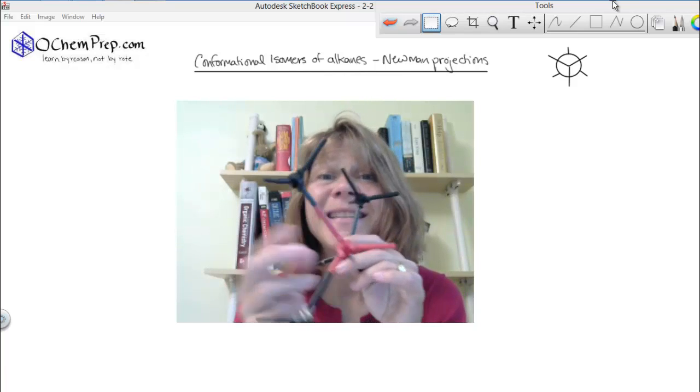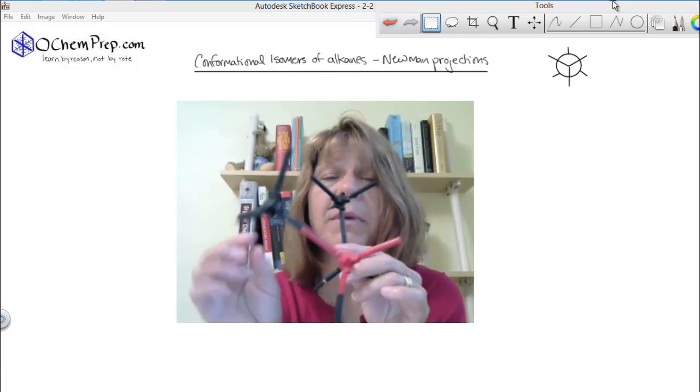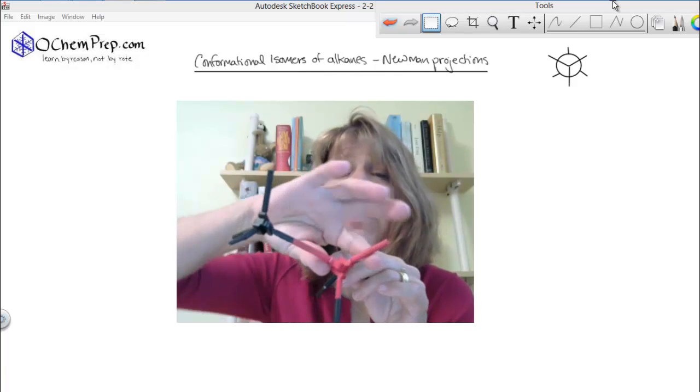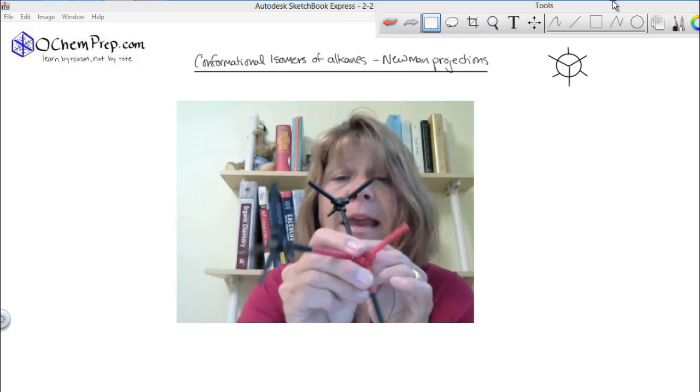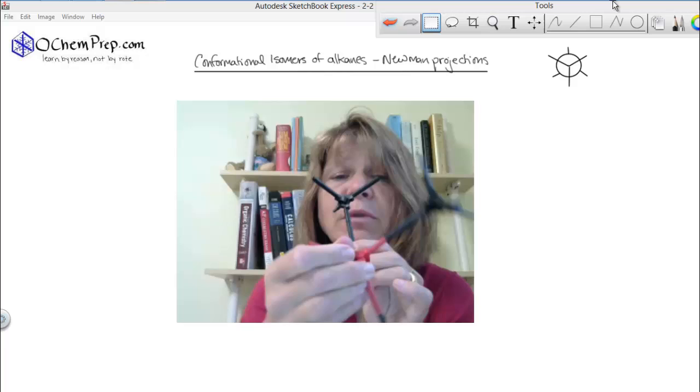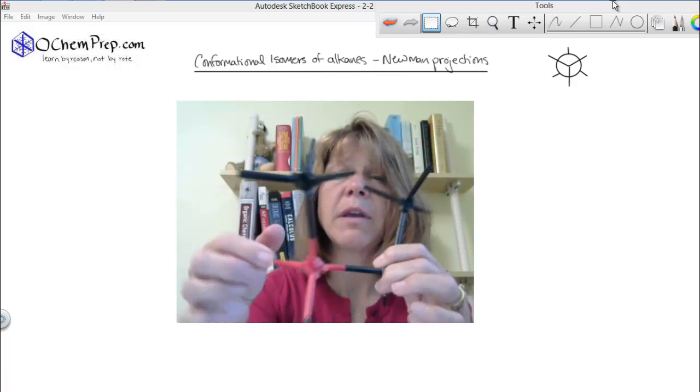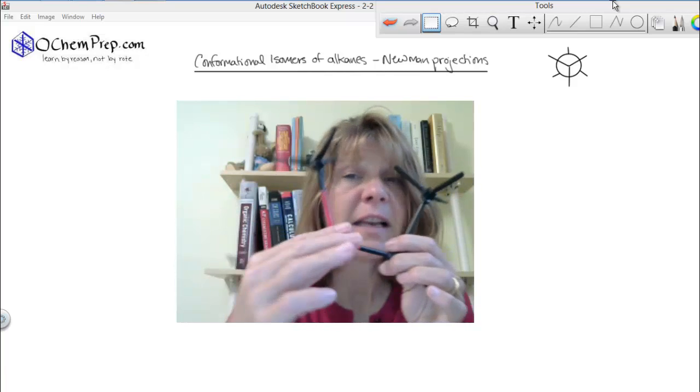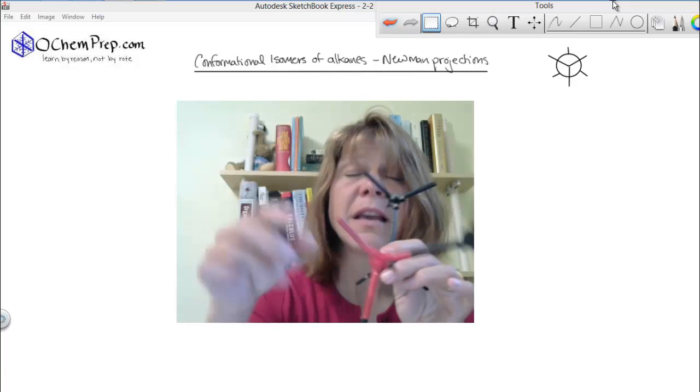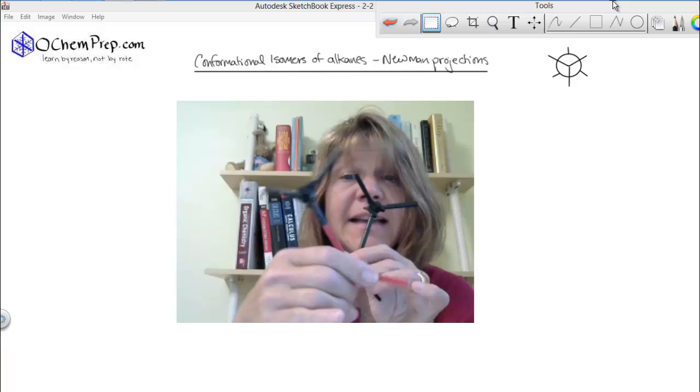We're going to talk about a different kind of isomer, one that you wouldn't even think is an isomer. It's an isomer about rotation around carbon-carbon single bonds. If you look as I rotate between carbon 2 and carbon 3 of 2-methylbutane, there are infinitely many isomers if you consider each position a different isomer.